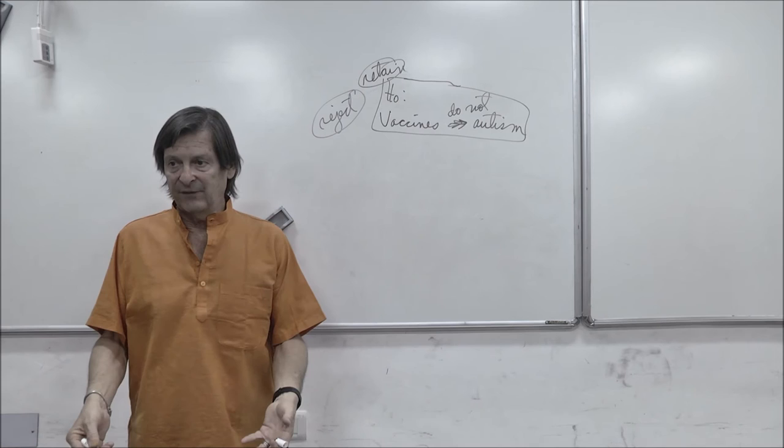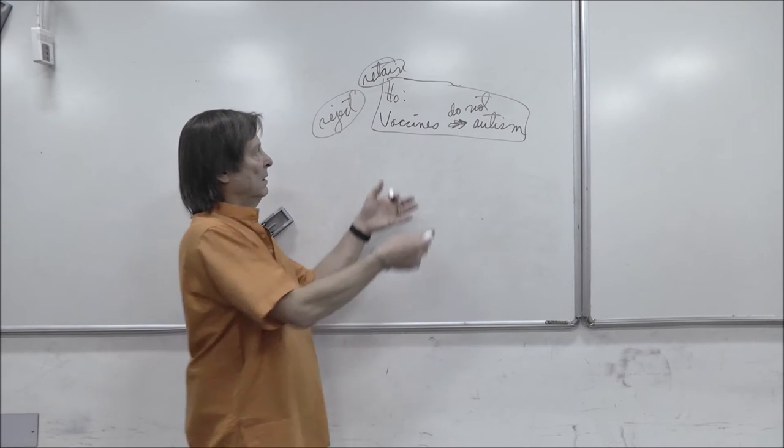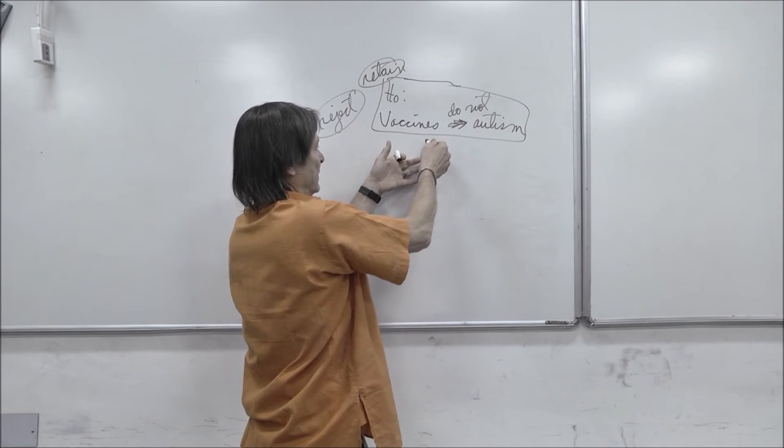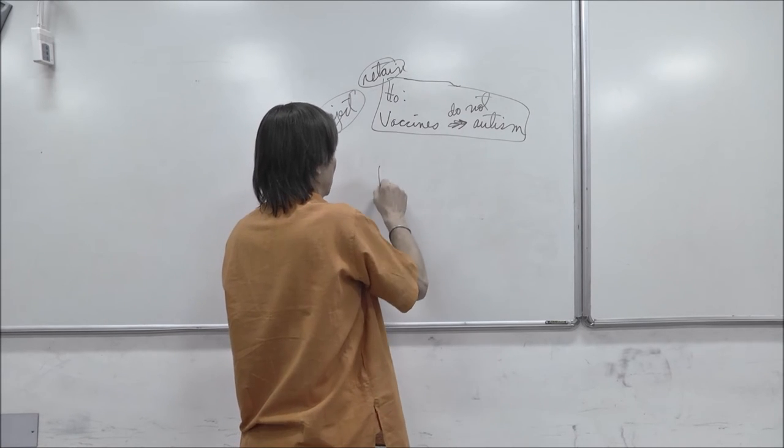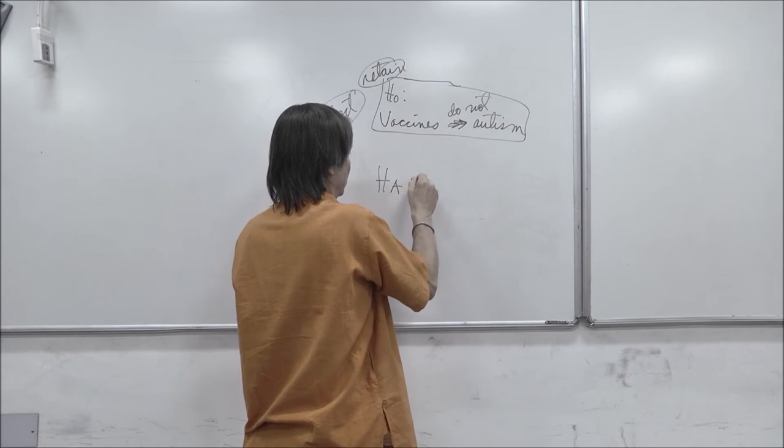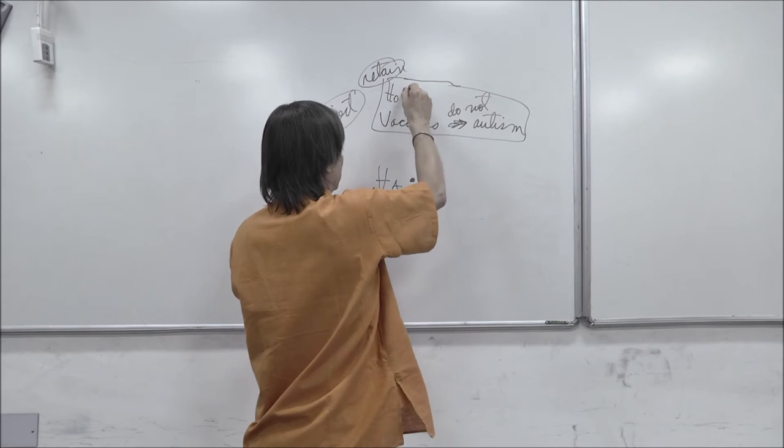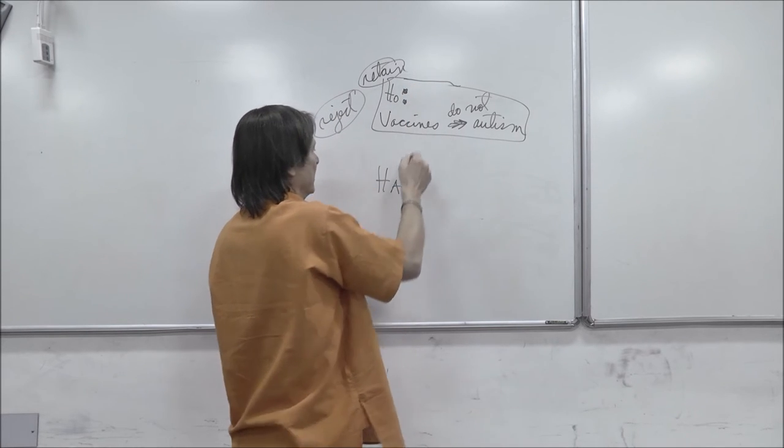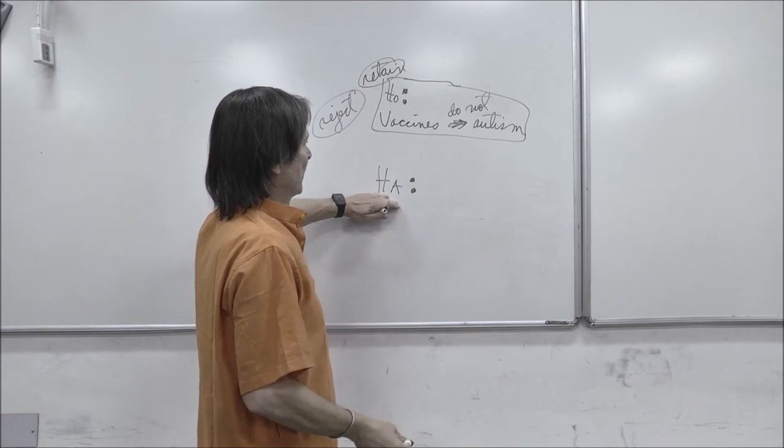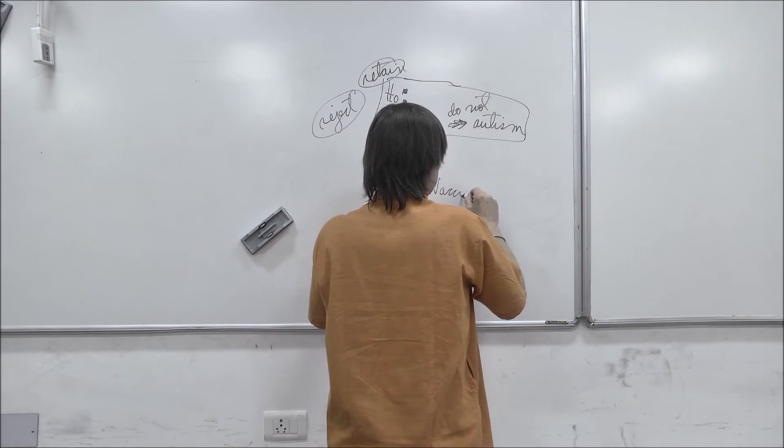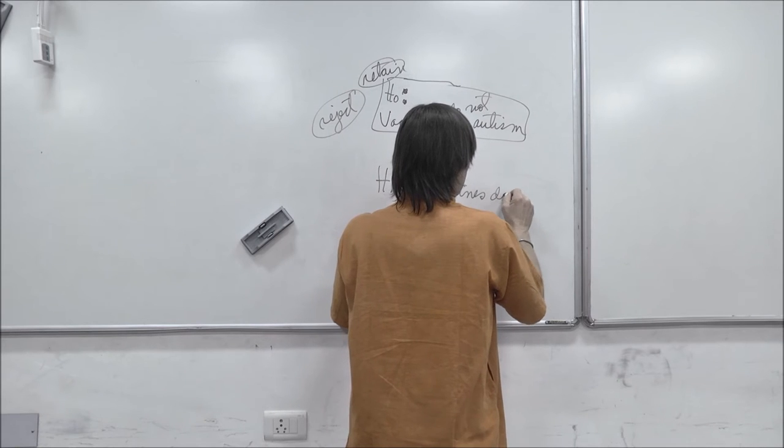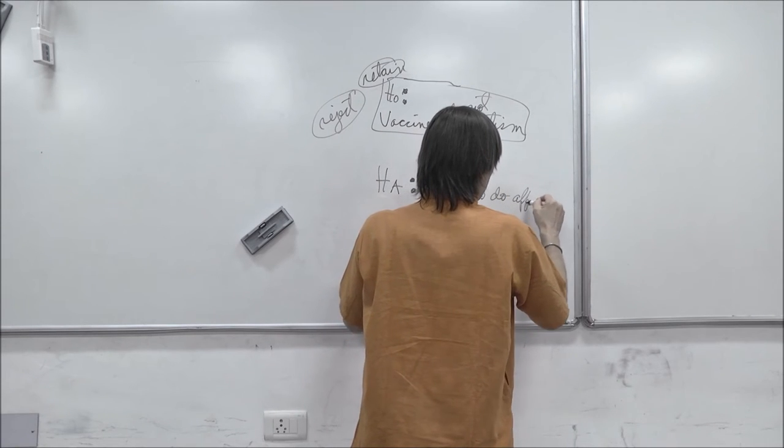If we find enough evidence that vaccines do cause autism, which they don't, then we reject the null hypothesis, and we'll have an alternative. It'll be in favor of an alternative. And I put a colon here after H-O-N-H-A, the alternative hypothesis. And that is that vaccines do affect autism.